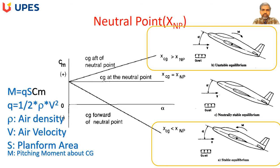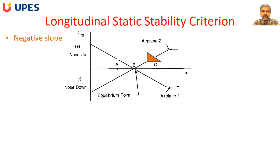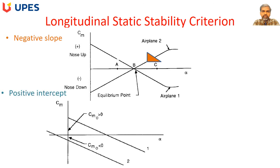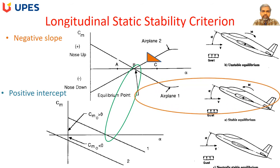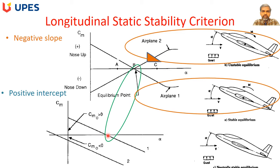If CG exactly equals the neutral point location, the airplane is neutrally stable. Along with the slope, the equilibrium point is also important. For a stable airplane with a negative slope, we need an equilibrium angle of attack in the positive range — this is achieved when the intercept CM0 is greater than zero. If CM0 is less than zero, the equilibrium angle of attack is at negative alpha, meaning the aircraft has to fly at a negative angle of attack, which is not physically feasible.